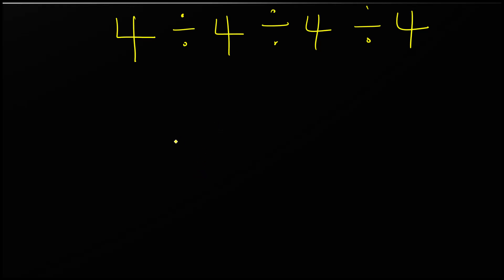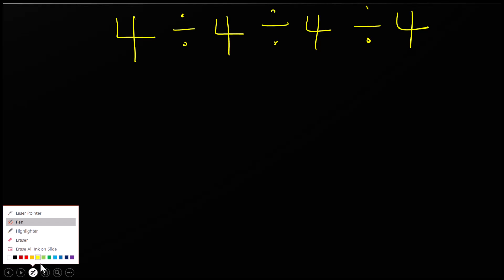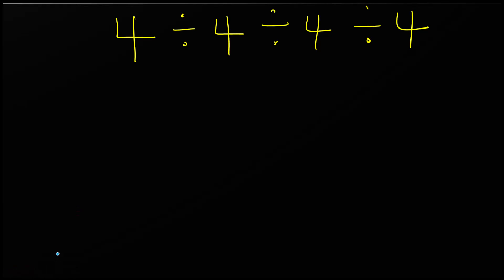How do we solve 4 divided by 4 divided by 4 divided by 4 divided by 4? You can choose to change the division sign here. When you have a divided by b,